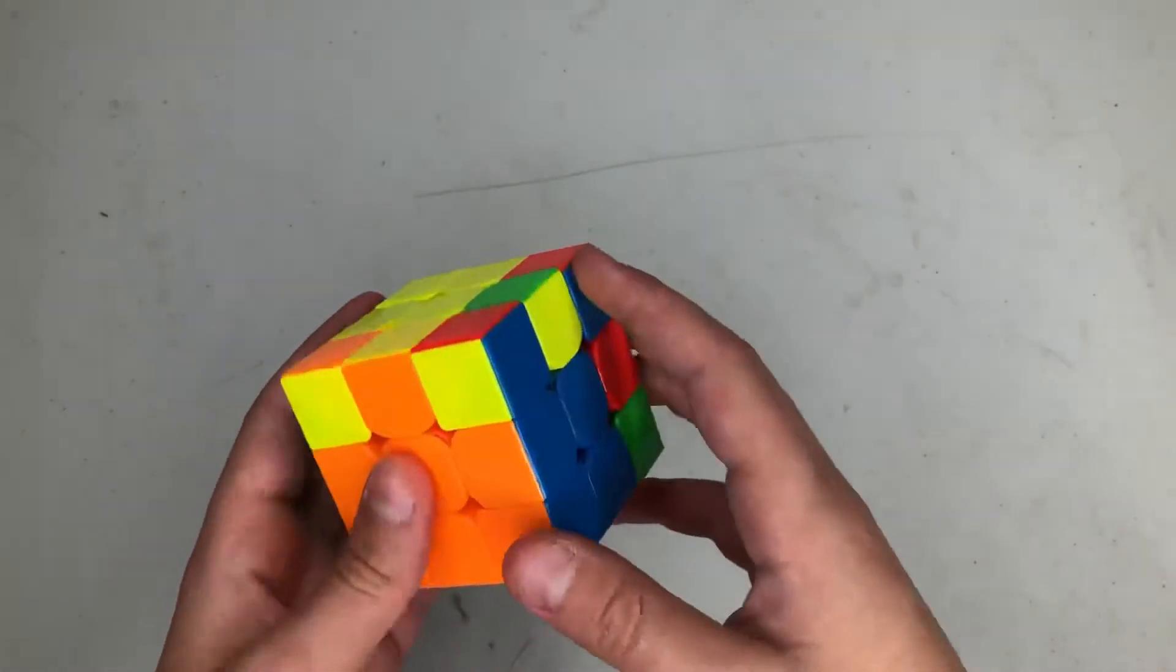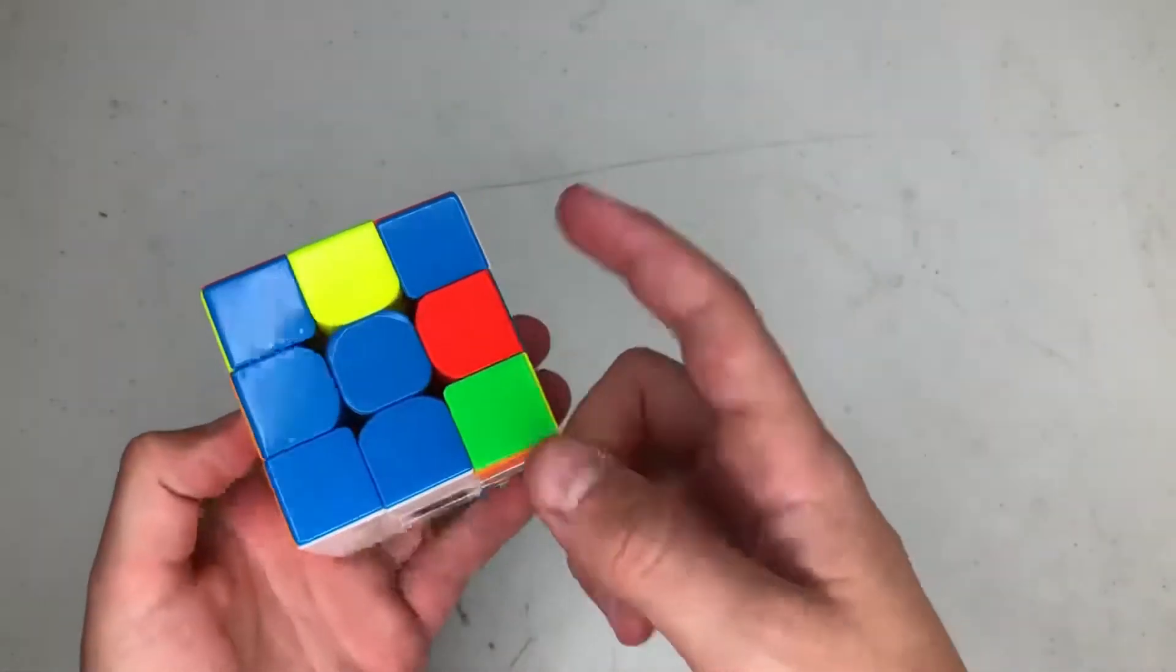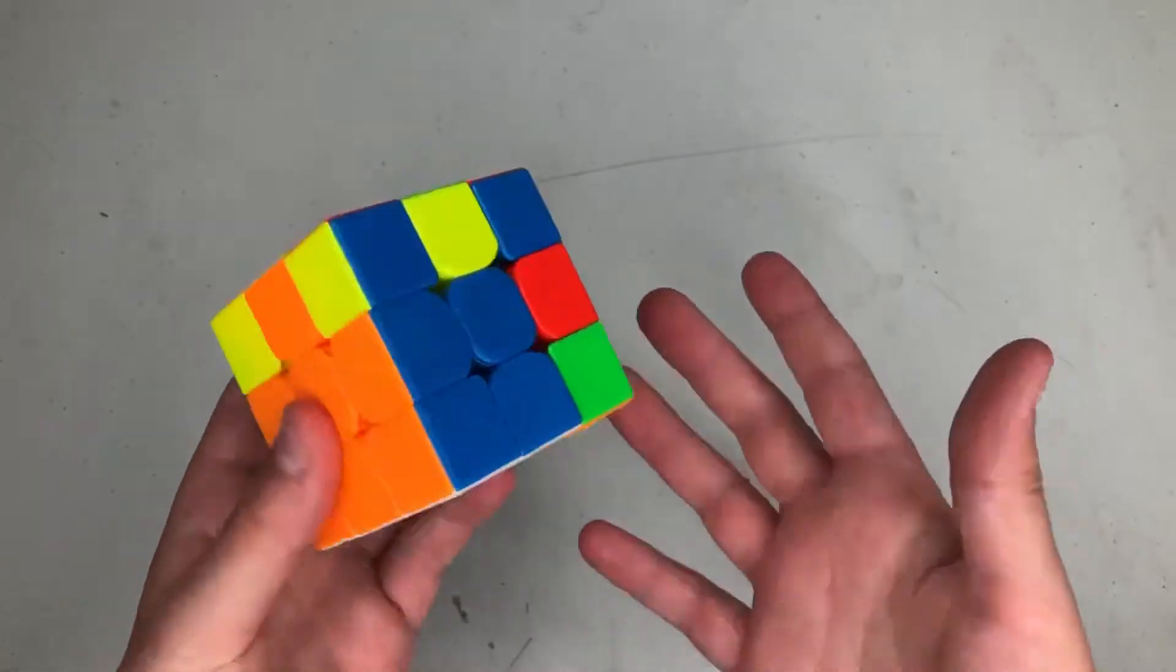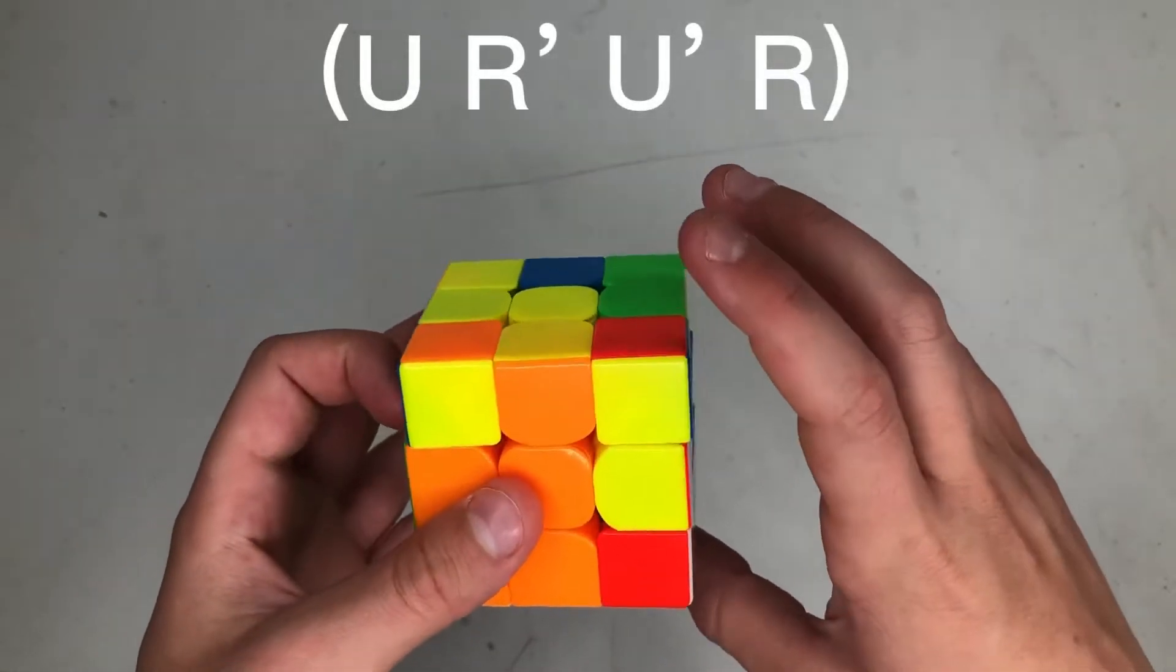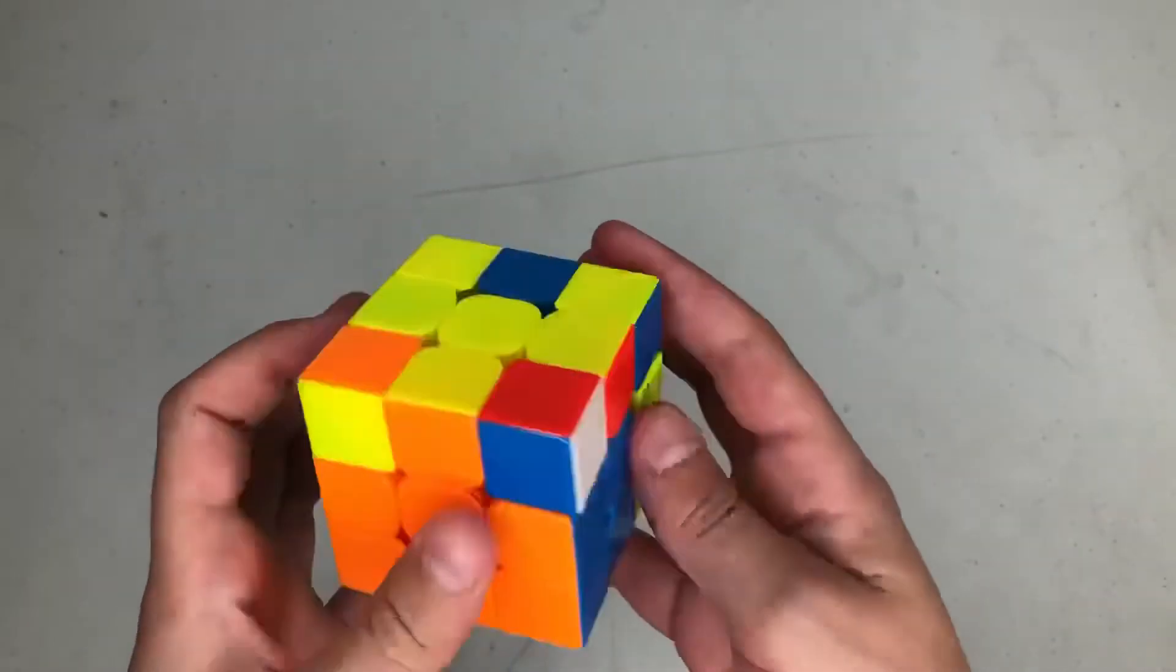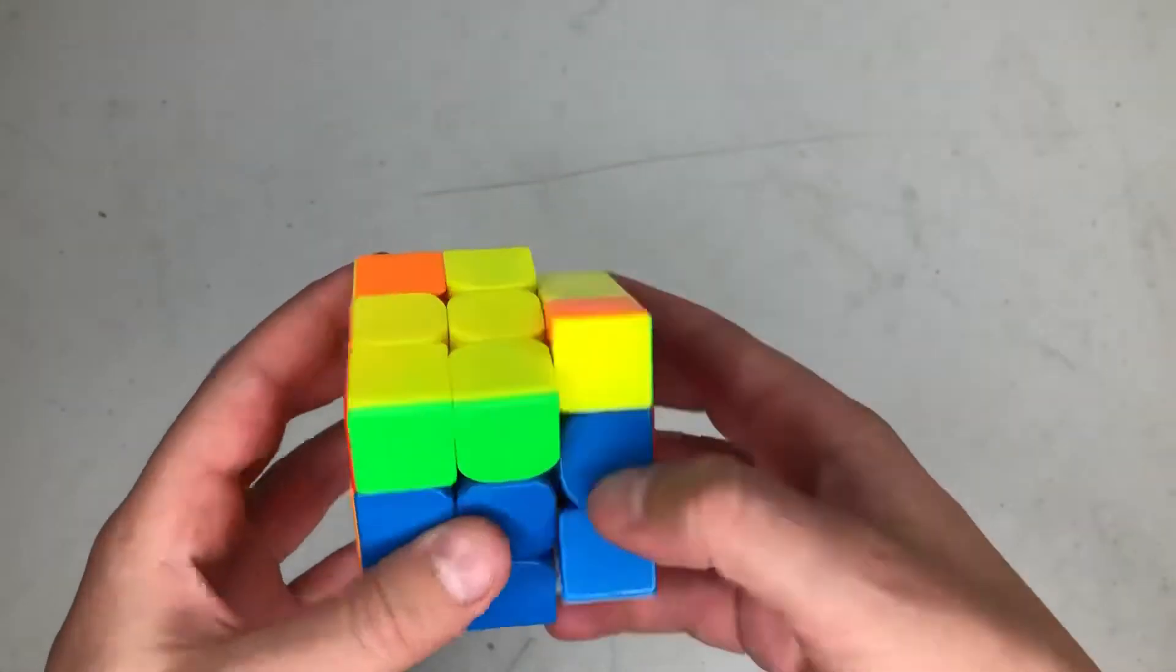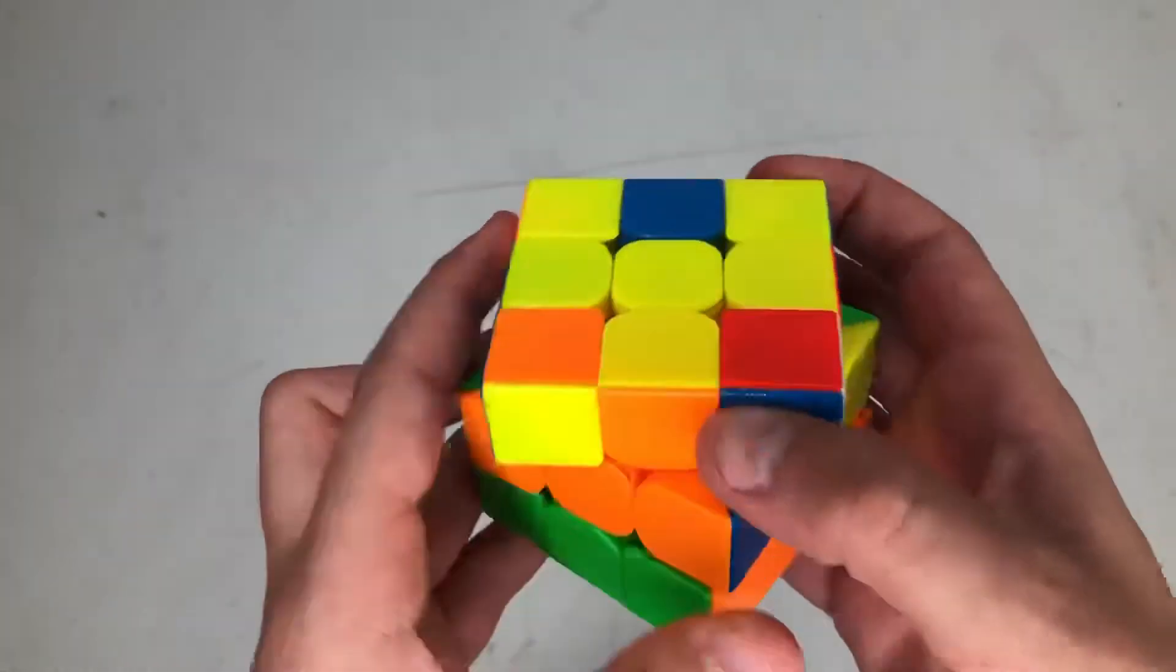Now this F2L case is coming from the angle where it's in the back. So what you're going to do is what you normally would do: U, R prime, U prime, R prime. So instead of rotating and doing this, or doing a wide D move, which actually works really well.